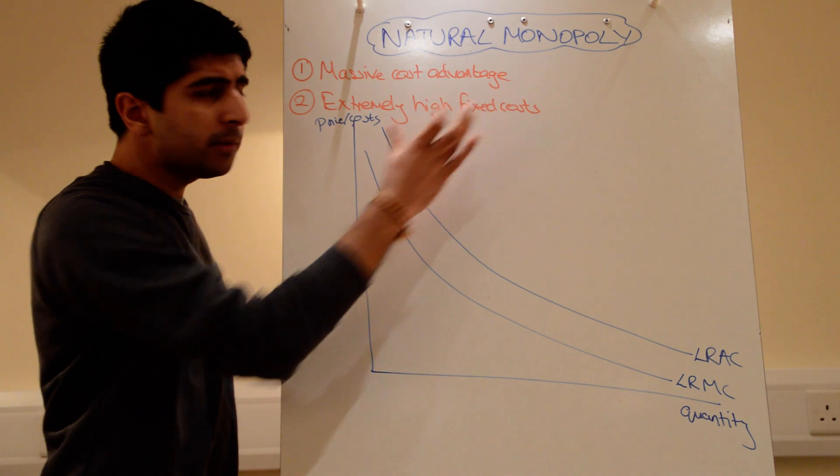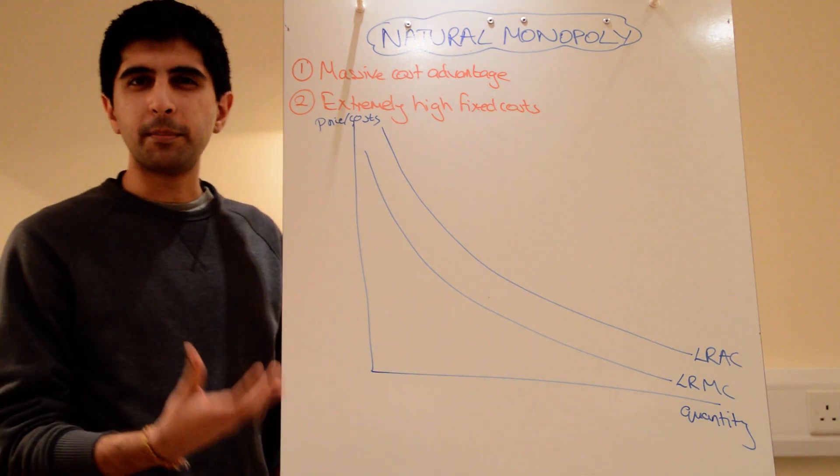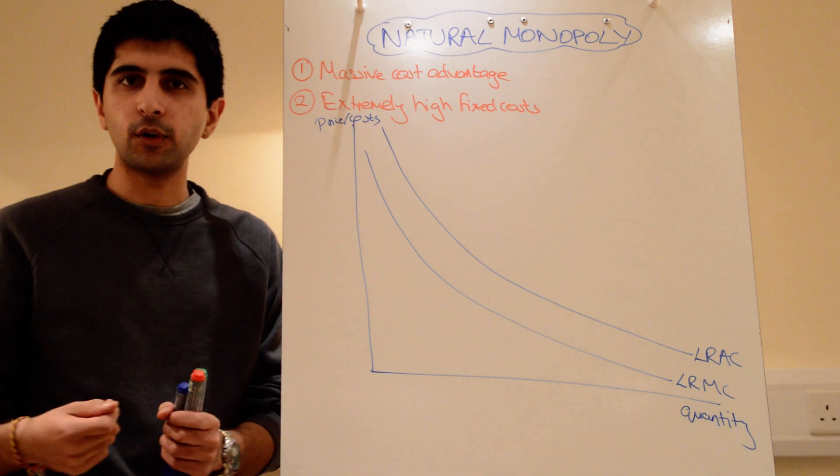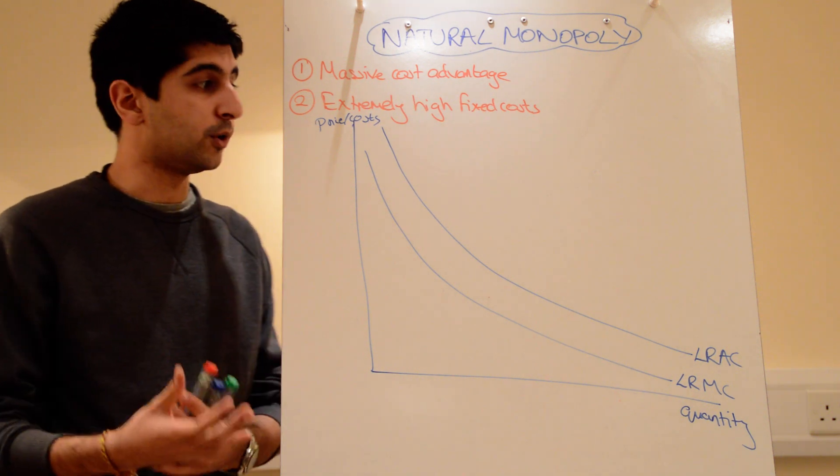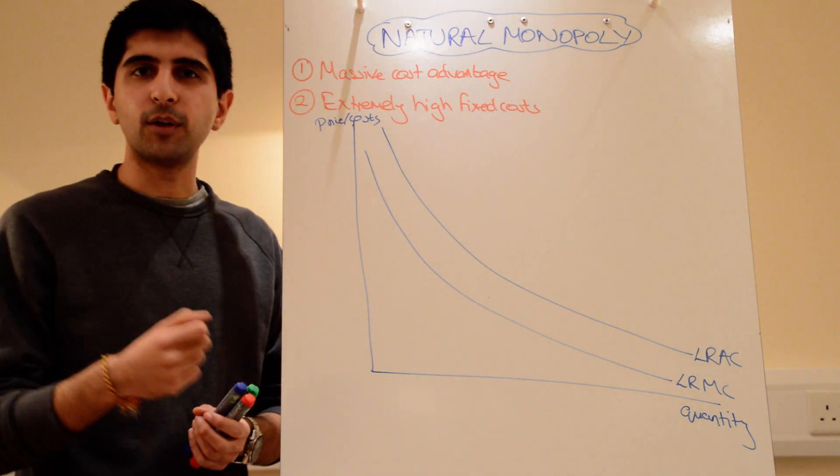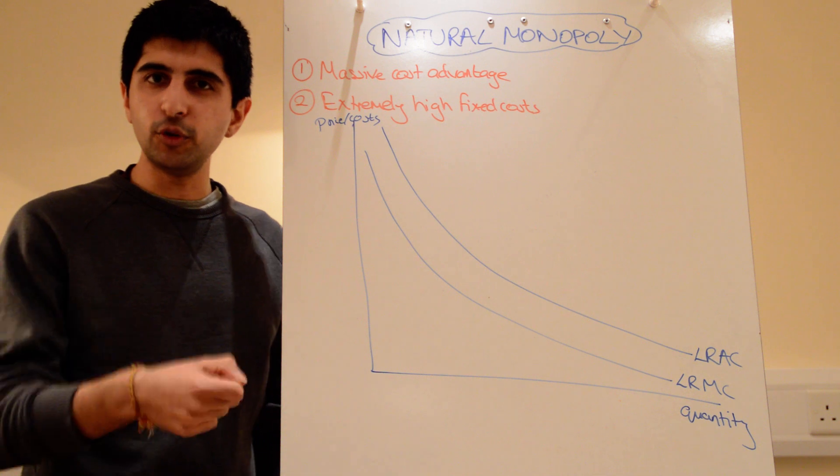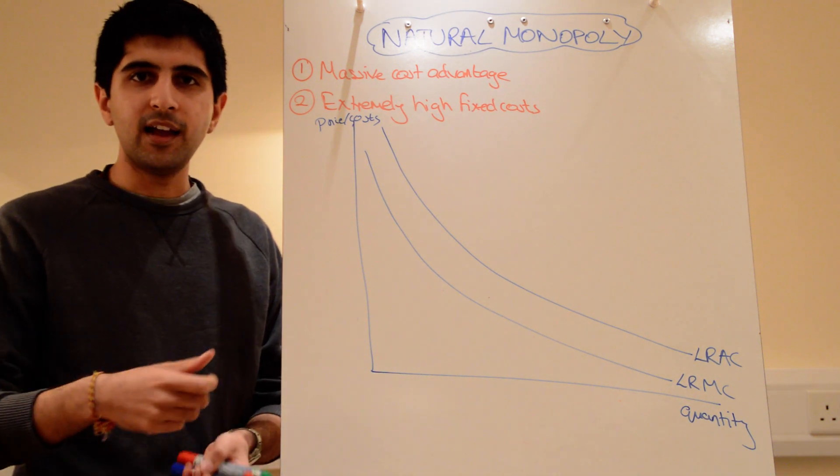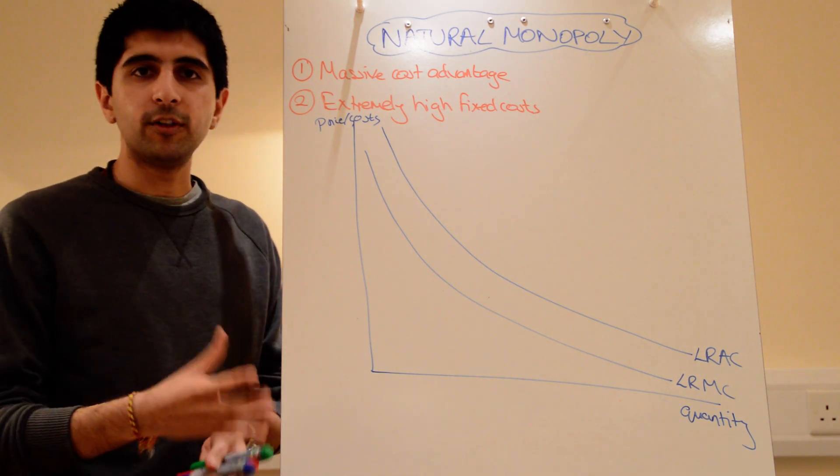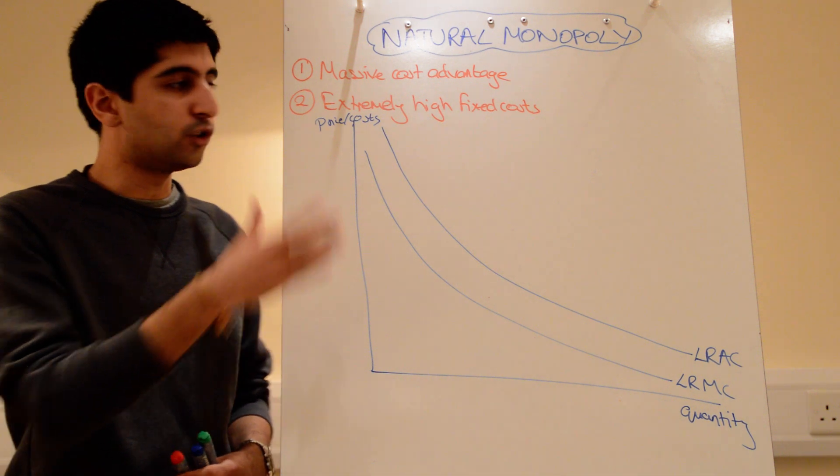There are extremely high fixed costs involved in actually producing these services. The water pipeline to spread water around the country, the pipe network that needs to be built, is absolutely enormous. And the cost of digging up the roads and getting this pipeline built is so expensive that it's actually wasteful for other firms to try and duplicate it. The firm that is there in the first place will just drive out the competition, use the cost advantage it has to drive out the competition.